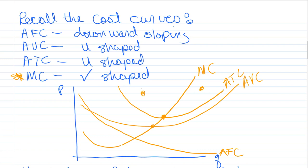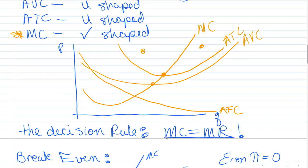Wherever marginal cost is above average variable or average total cost, they are increasing. And whenever marginal cost is below average variable and average total, they are decreasing. The decision rule for determining Q star is always where marginal cost equals marginal revenue — where the cost of the last unit just equals the revenue generated from the sale of the last unit. Essentially, we're capturing all those contributions to profit before that point where marginal revenue is greater than marginal cost.